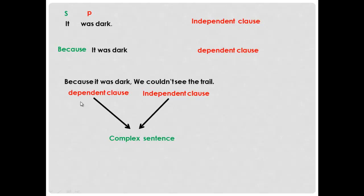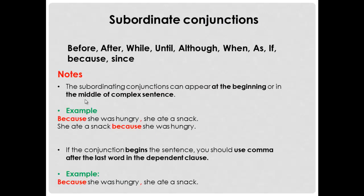This clause is called a dependent clause because it needs another sentence to depend on to get the whole meaning. Now, subordinate conjunctions — we have many examples: before, after, while, until, although, when, as, because, and since.